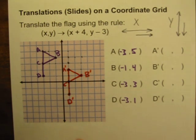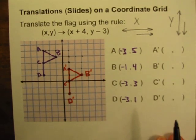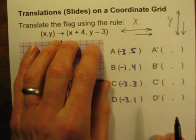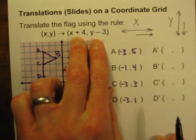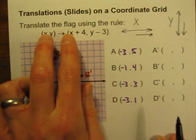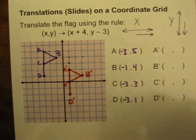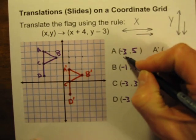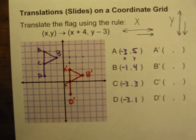We can get the coordinates of this new flag by reading them off the graph, which is definitely one way of doing it. Another thing we could do — if you wanted to get the coordinates after doing this translation — you actually don't even need the graph. You could just use these formulas, this coordinate rule, to figure out the new points. Here is our x coordinate and there is our y coordinate.